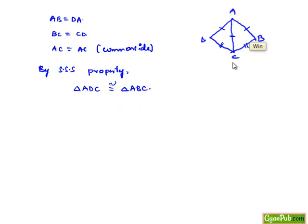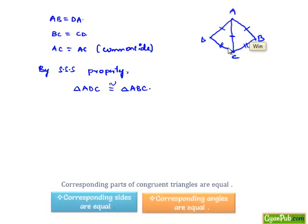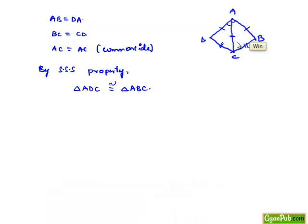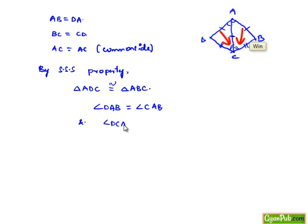We know when two triangles are congruent, their corresponding angles are equal. So the corresponding angle DAC can be equated to angle CAB, and also angle DCA can be equal to angle ACB. Therefore we can say that AC is bisecting angle A and angle C. This completes the first proof.